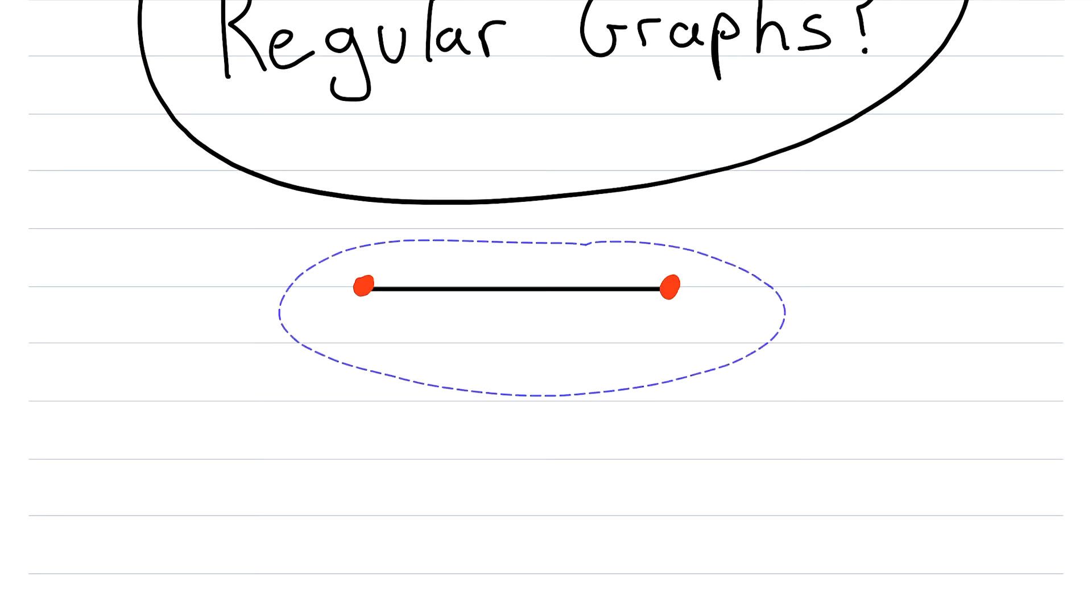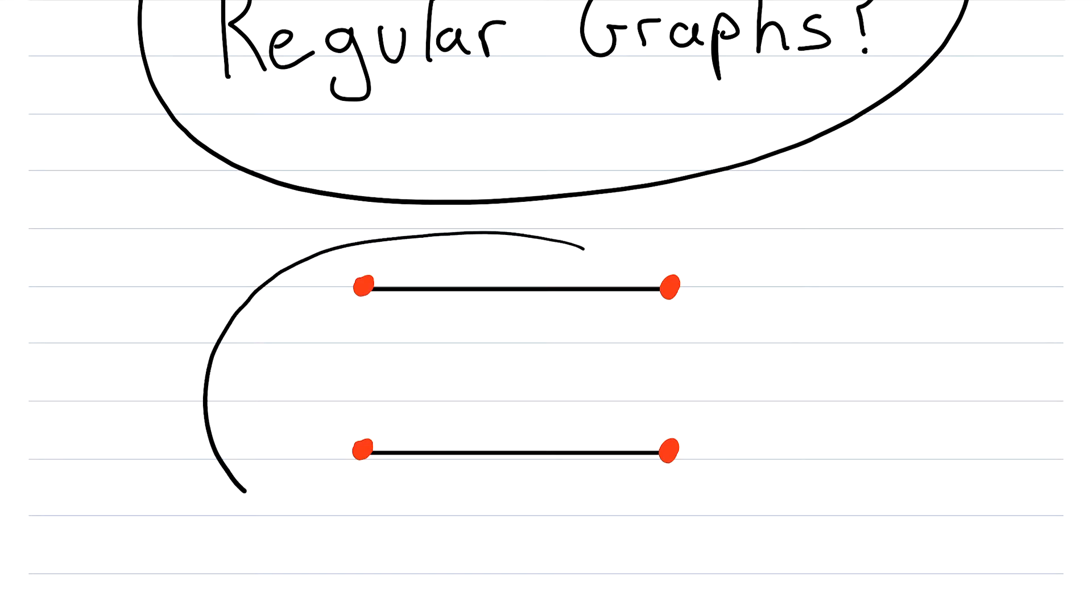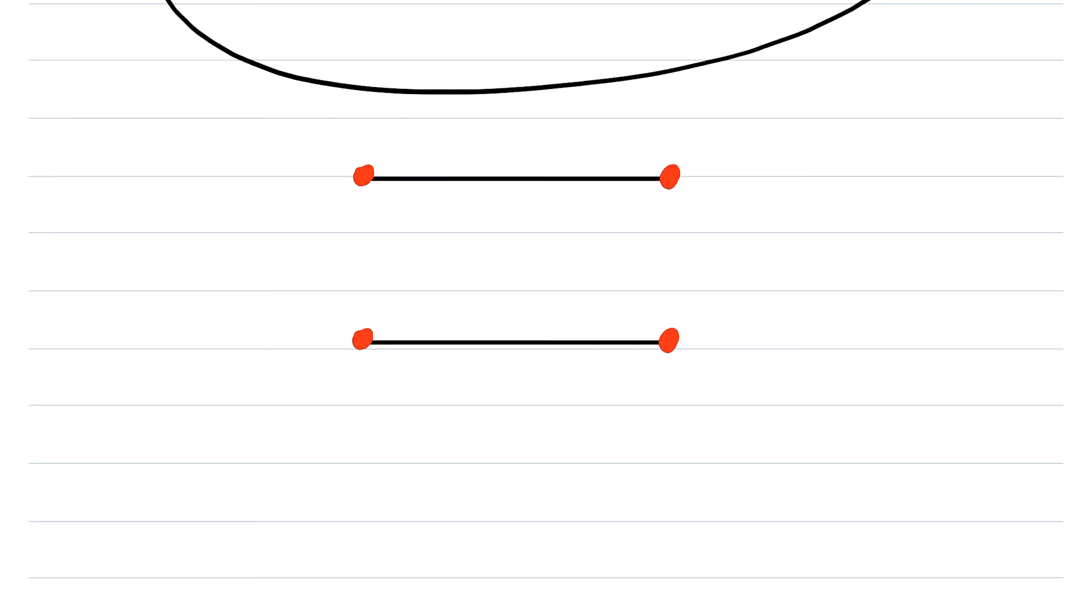Do you think we could find another graph where every vertex has degree 1? I think that we certainly could. Let's paste this in here. And then right here, this whole graph here is another regular graph. Every vertex in this graph has degree 1. So, that's kind of boring.